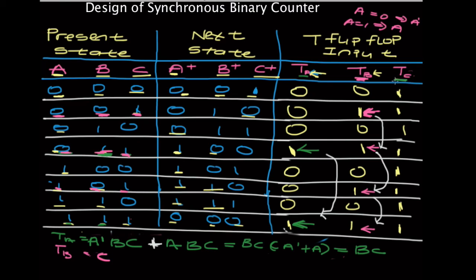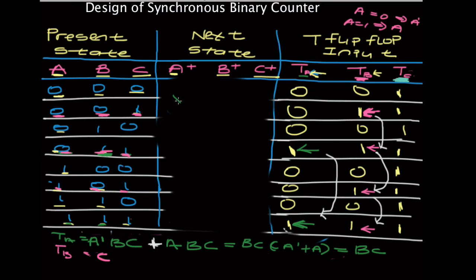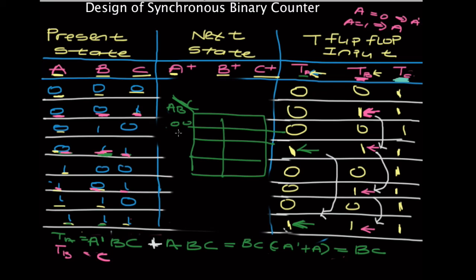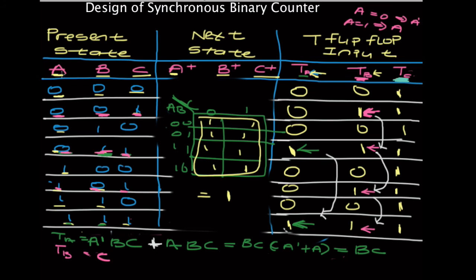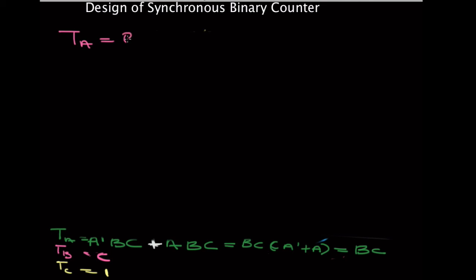And last but not least, let's find the T flip-flop input equation for TC. You notice that every entry in this column is a 1. In K-map terms, if every cell is filled with 1s, no matter how big the map is, the equation minimizes to 1. So TC equals 1. Right now we have: TA = BC, TB = C, and TC = 1. With this information, we can design our binary counter.